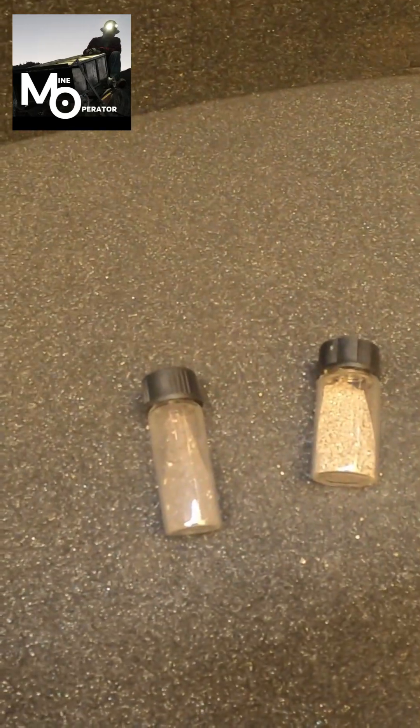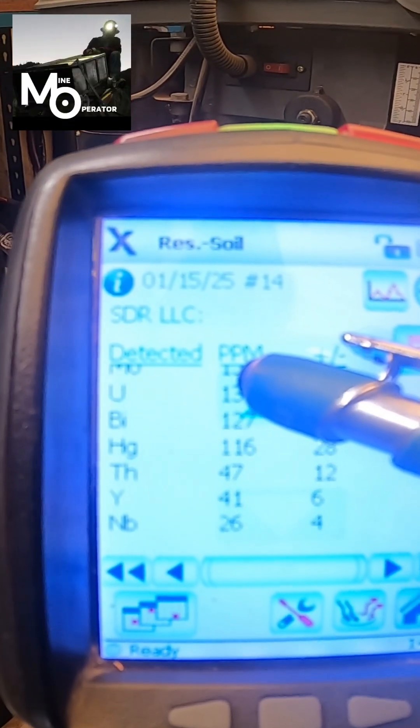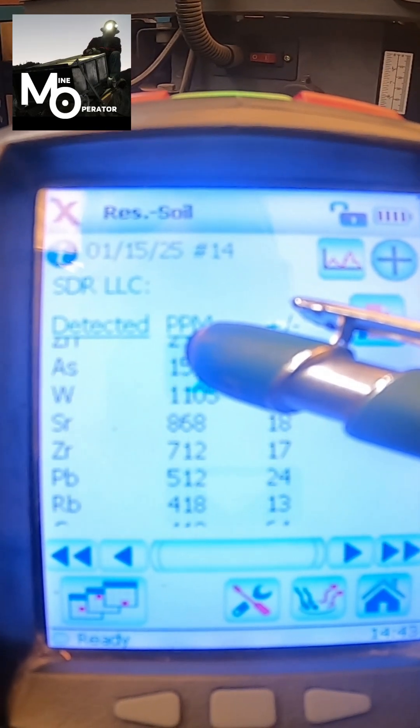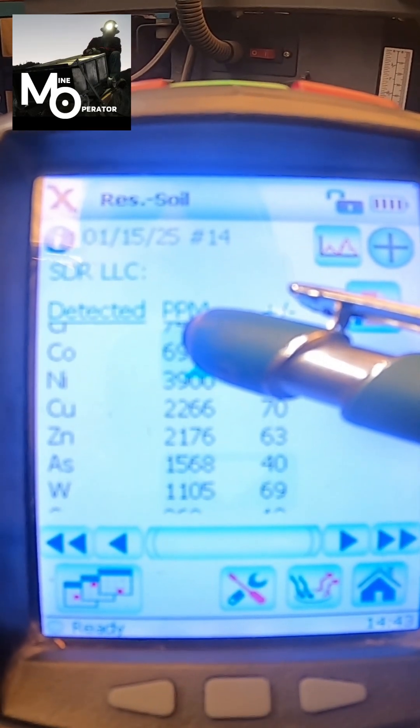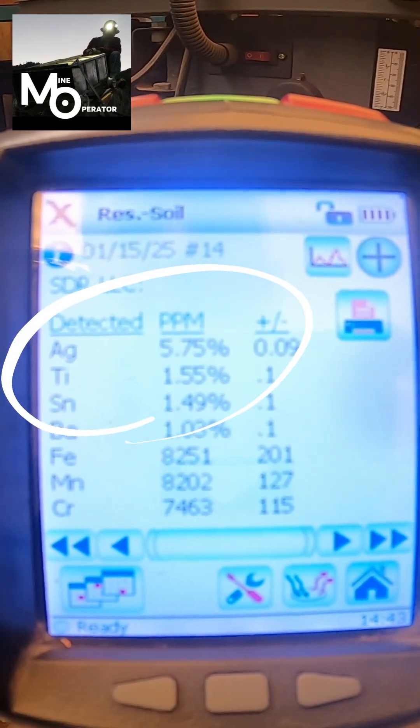Sean, we encourage you to get this sample tested and verified by an ISO accredited lab. In soils mode, it did identify 5.75% silver. However, soils mode will not identify gold or the platinum group elements.